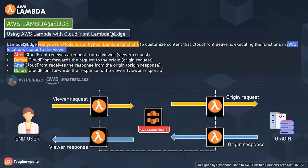The second trigger point is origin request — this is an outgoing request from CloudFront. It triggers the Lambda code before CloudFront forwards the request to the origin. It has to pass through CloudFront first. Because it fires just before the origin receives the request, it is called the origin request event.